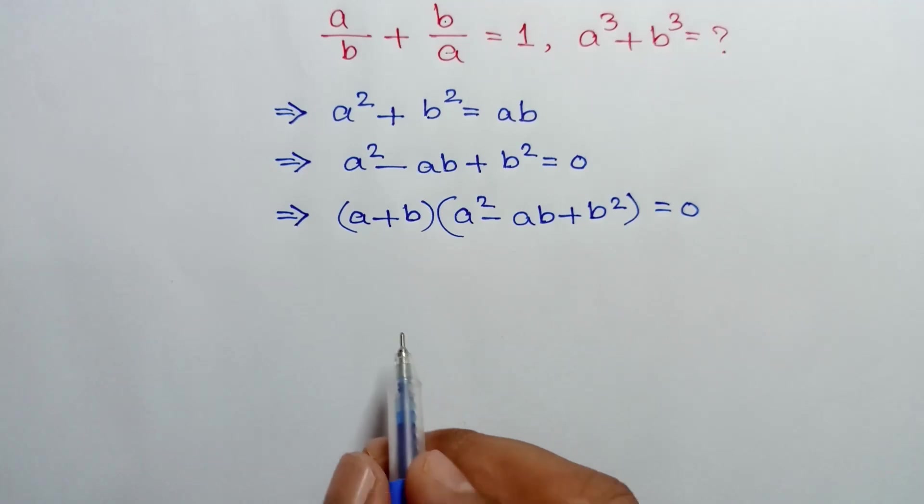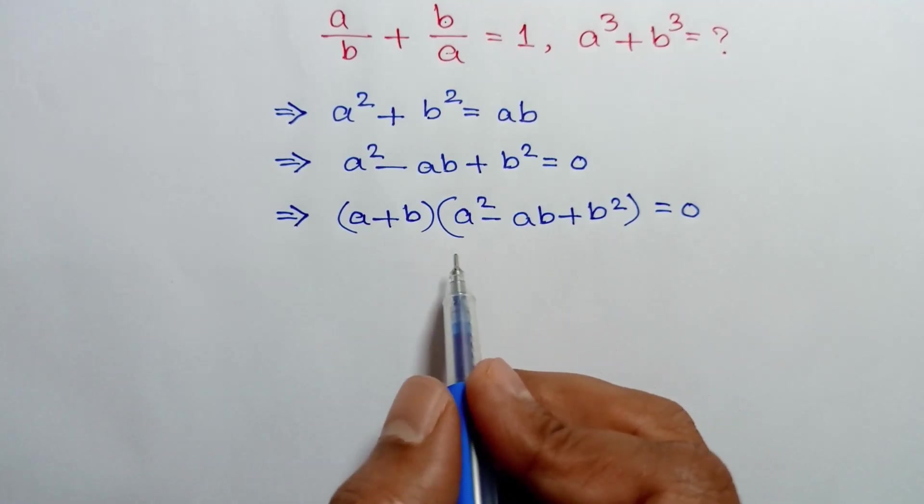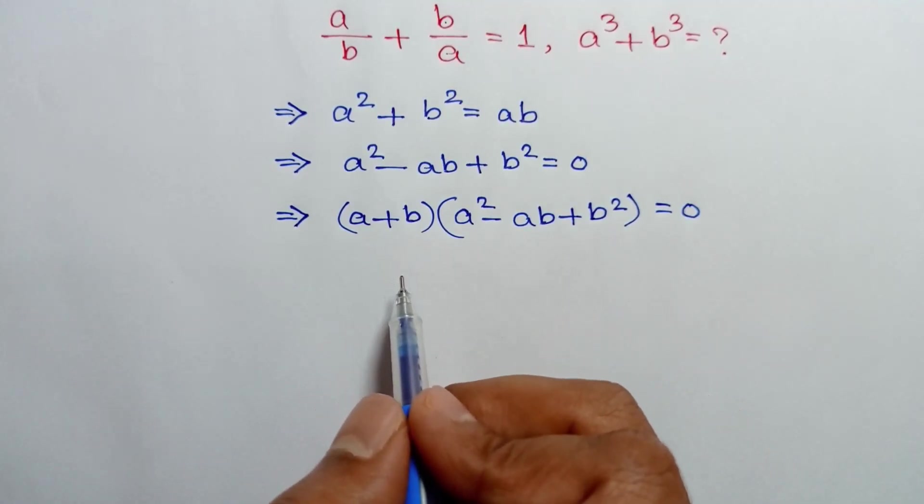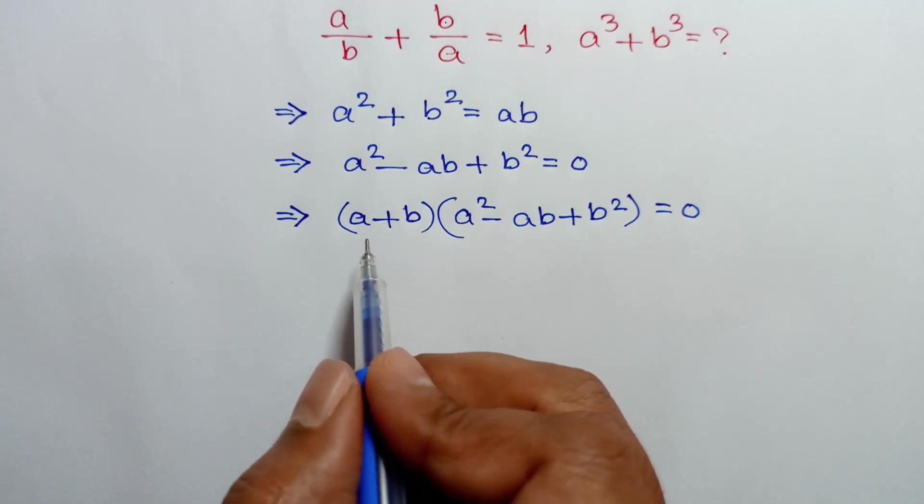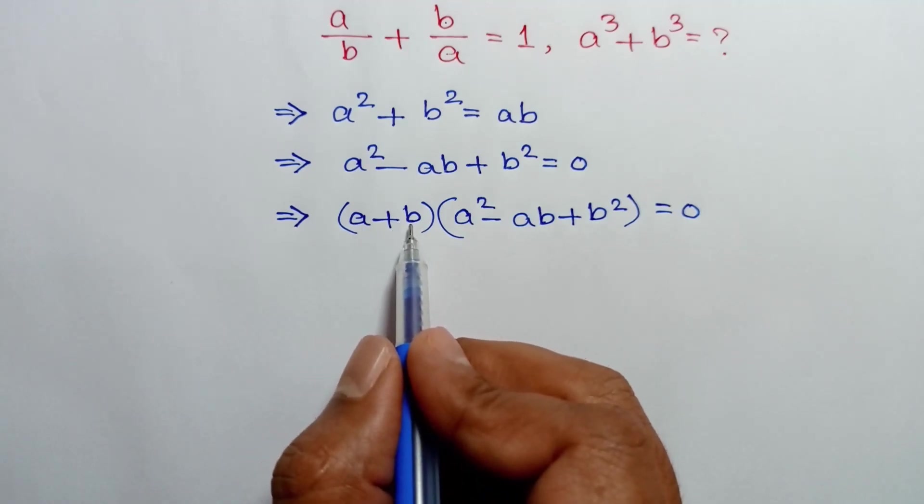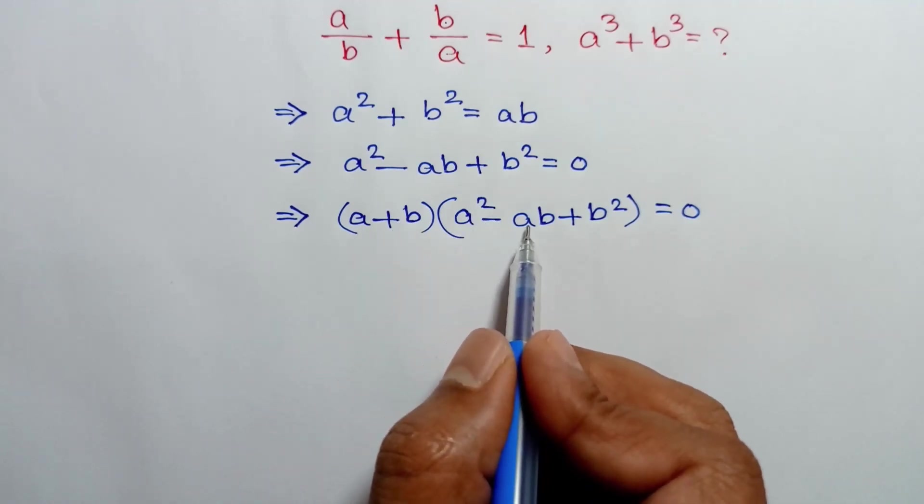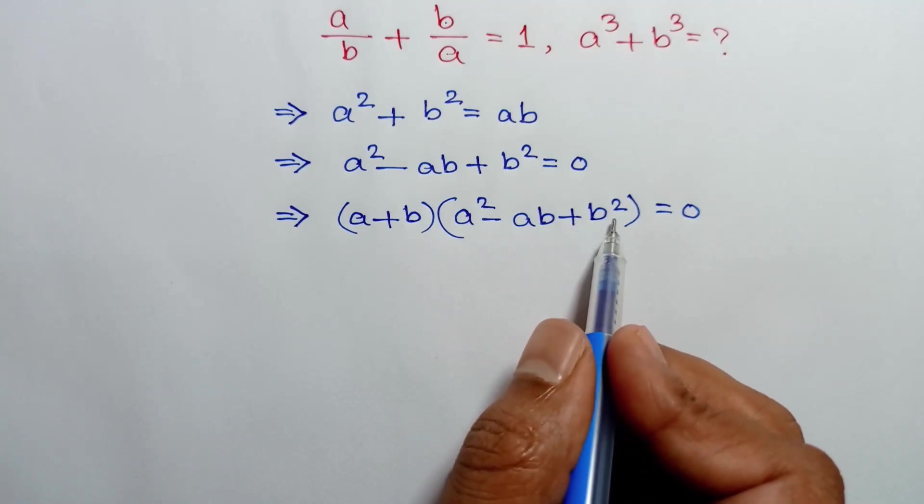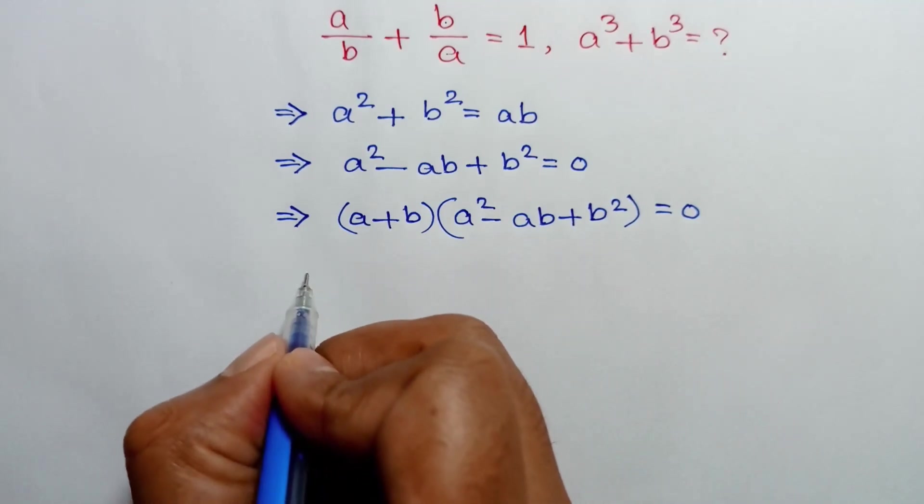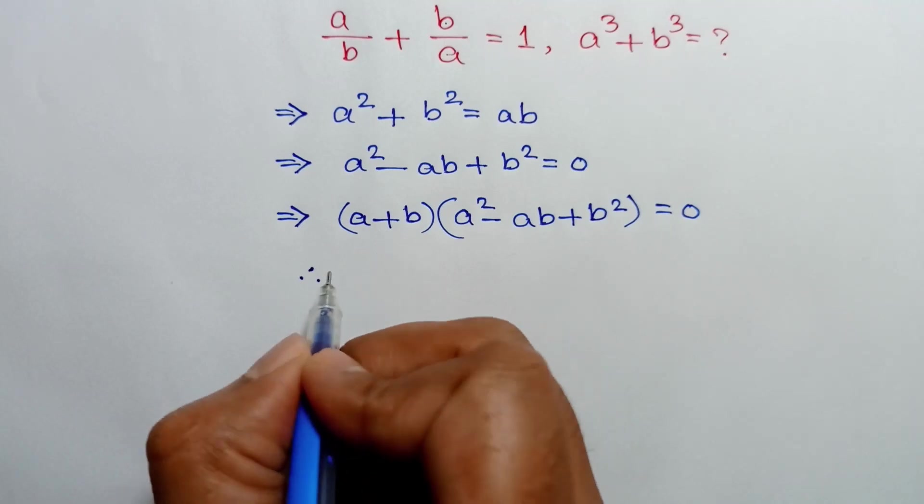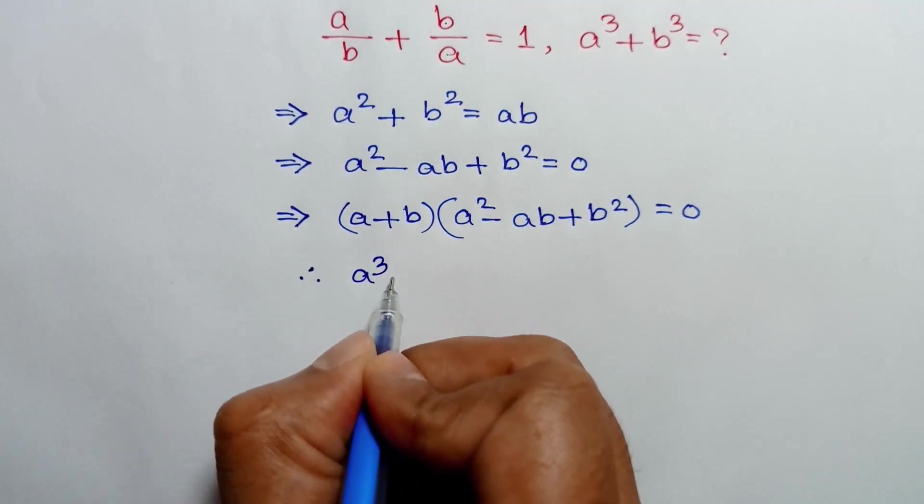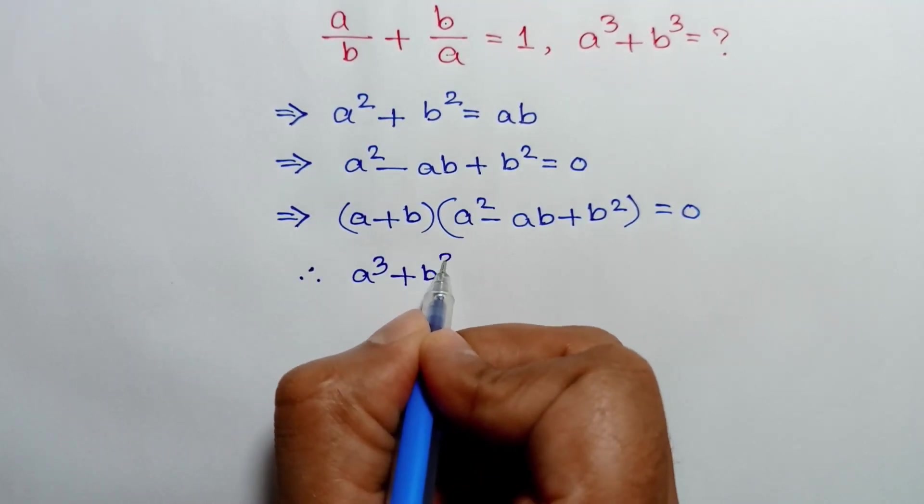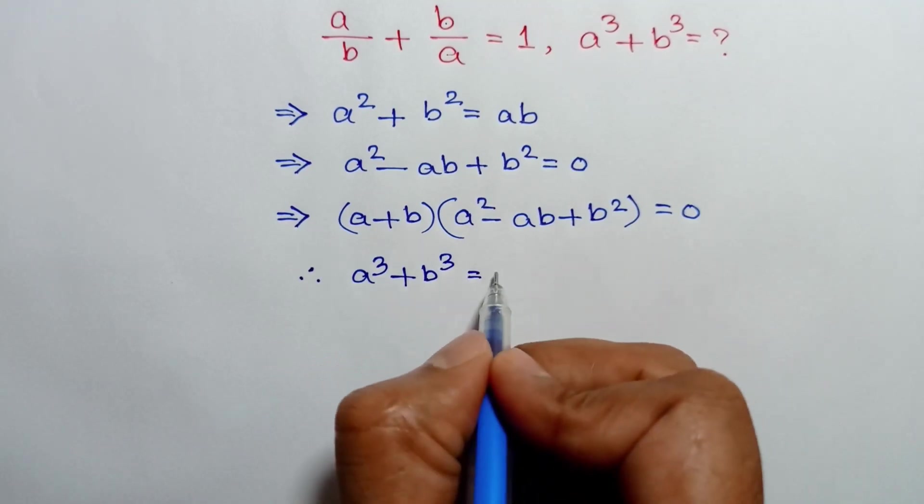Now, this is a formula of a cube plus b cube is equal to a plus b times a square minus ab plus b square. So we can write it as a cube plus b cube is equal to zero.